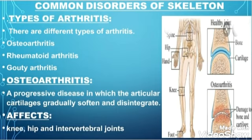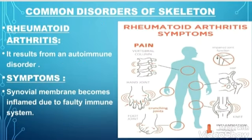The second type of arthritis is rheumatoid arthritis, and it results from an autoimmune disorder. In this, the body's own immune system destroys the synovial membrane, due to which it becomes inflamed. So unlike osteoarthritis, which is an aging disorder, rheumatoid arthritis is an autoimmune disorder. The synovial membrane becomes inflamed due to the faulty immune system, synovial fluid accumulates in it, and it causes swelling and inflammation which causes pain. As seen in the diagram, rheumatoid arthritis causes pain and inflammation in different joints due to the accumulation of synovial fluid.